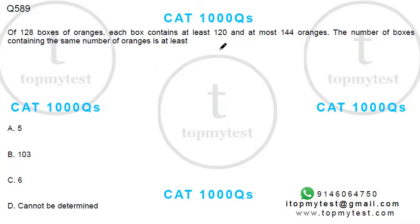128 boxes of oranges. Each box contains at least 120 and at most 144 oranges. The number of boxes containing the same number of oranges should be at least... So I want as few boxes to contain the same number of oranges.